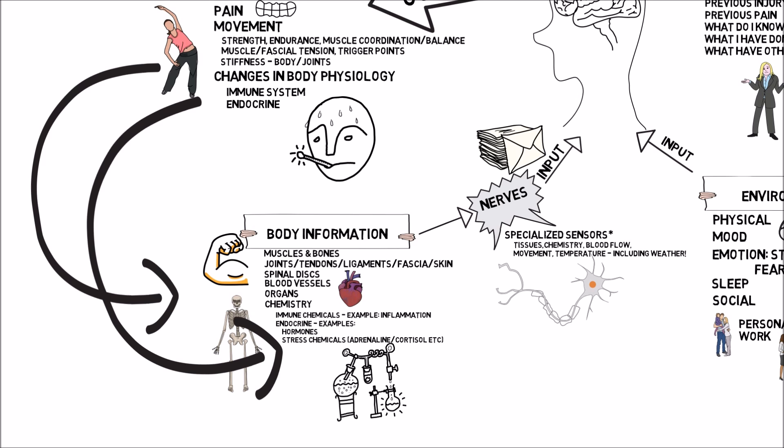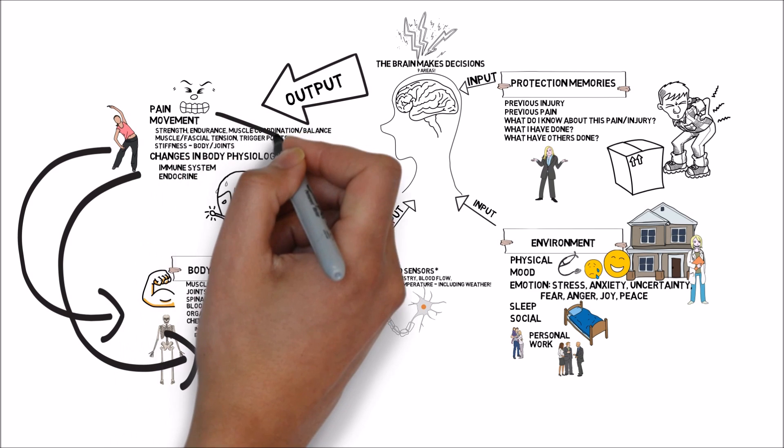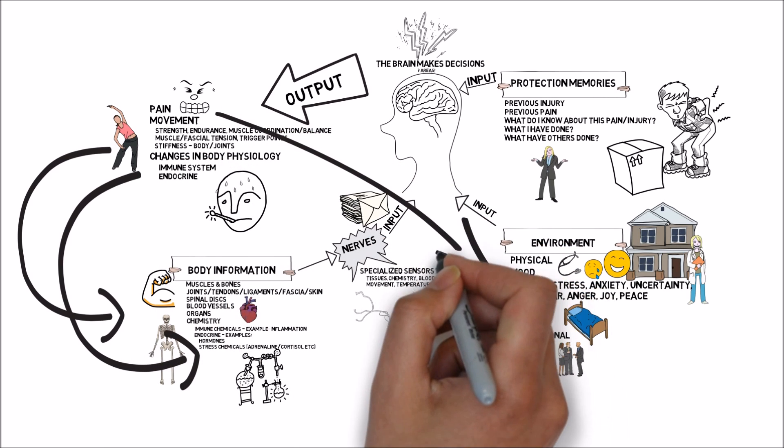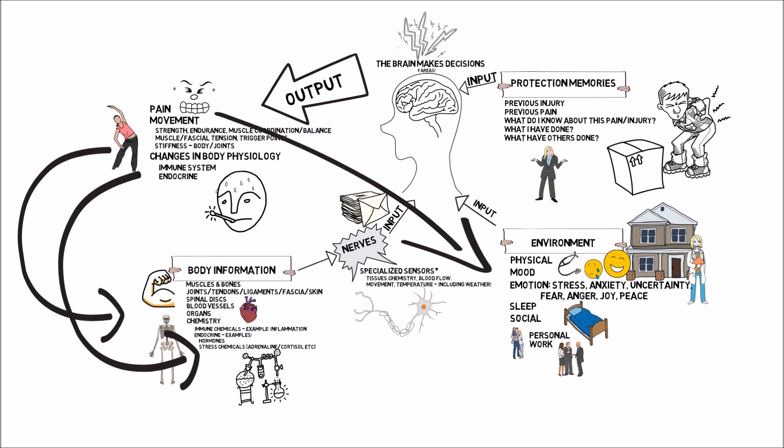Because movement changes, what became an output can now become an input. How we move changes, and now our body information has changed as a result. Our altered physiology means our chemistry sensors must pick up new chemical signals from what the brain decided was a good protection strategy. And all these changes mean that our pain experience — which cannot itself be an input back into the body — can however influence our environment: how we feel, our mood, our sleep. If you hurt, it's hard to sleep. All these things come full circle, creating this loop — and you can see how pain can become chronic.